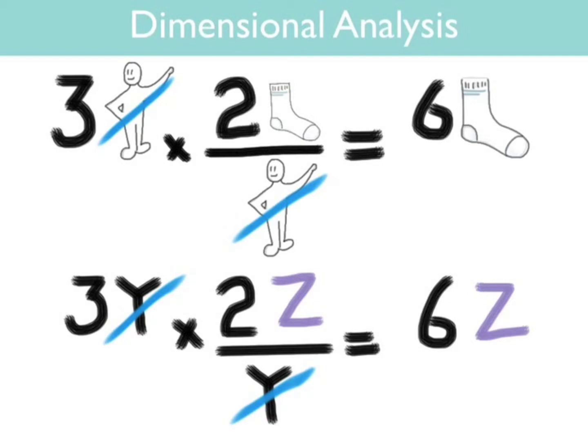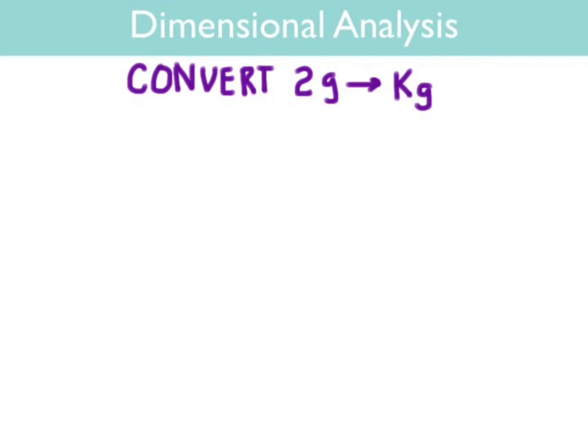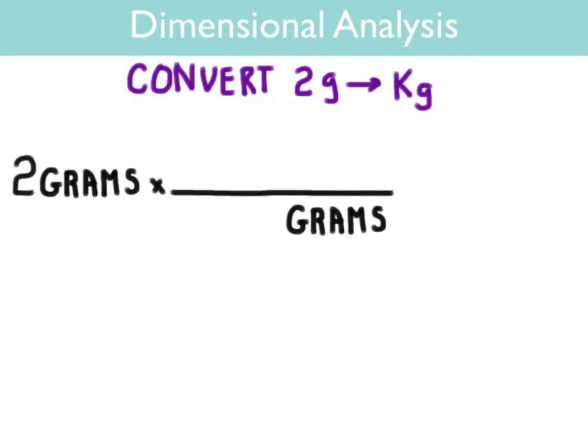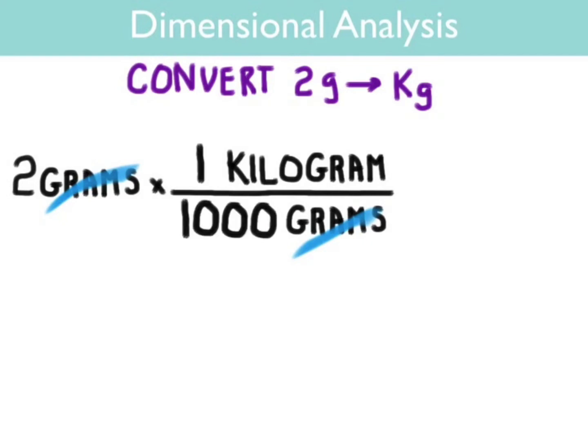You can do the same kind of transformations from one unit of measurement to another. For example, let's convert two grams into kilograms. Start with the grams and mathematically we're going to divide grams by grams so that they cancel. We're going to convert to kilograms so that goes on the top. Mathematically we're canceling grams and multiplying times kilograms. We now put the numbers in to make the statement true and do out our math. We get 0.002 kilograms.